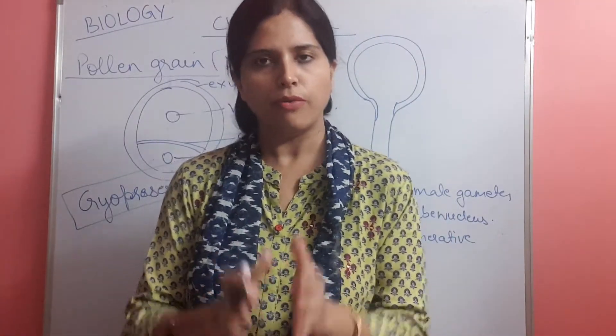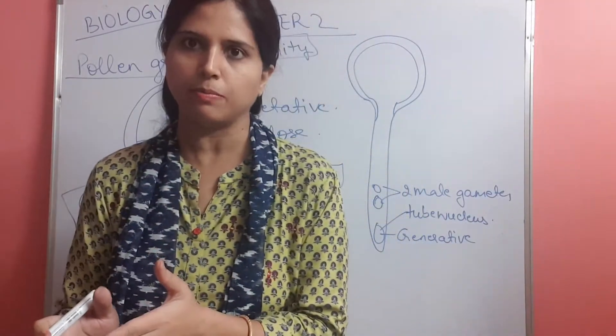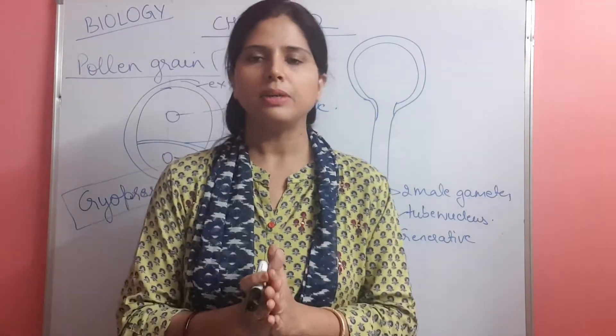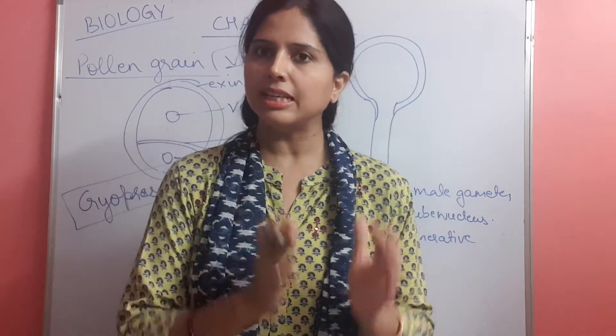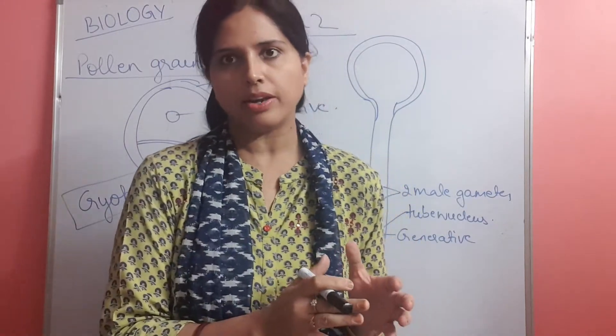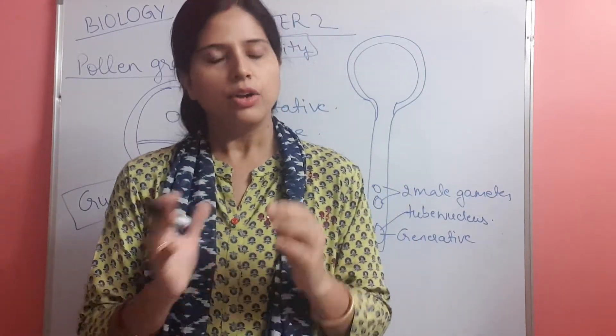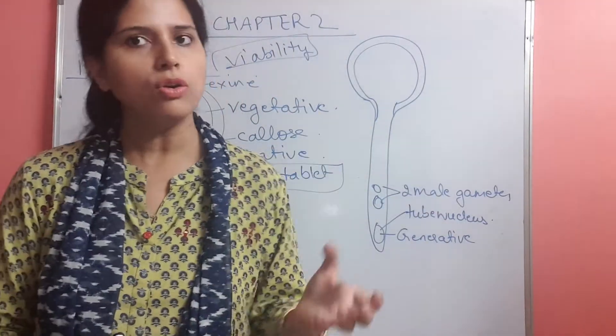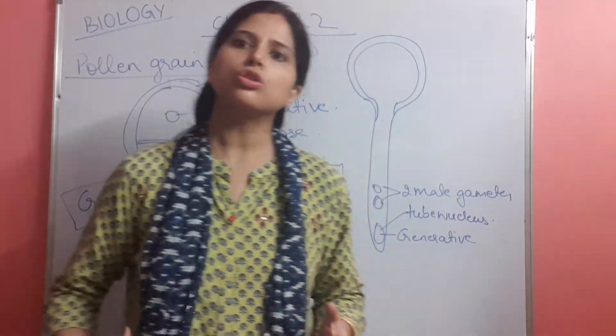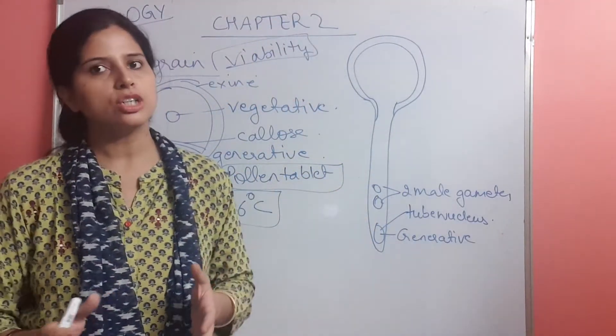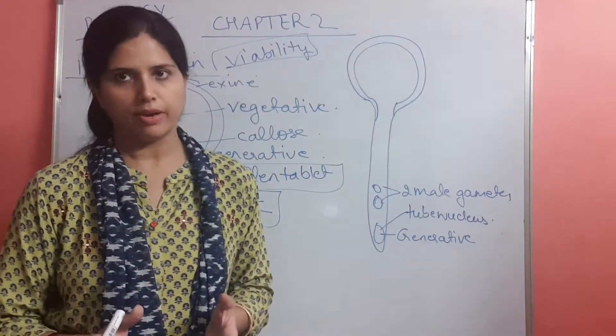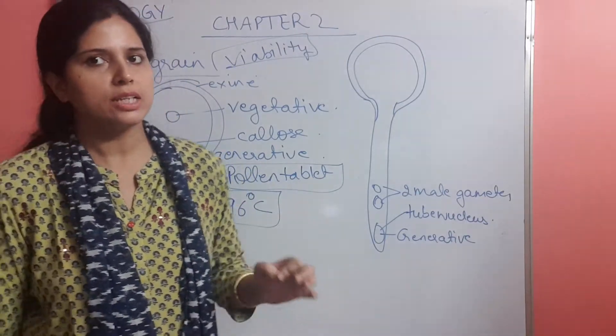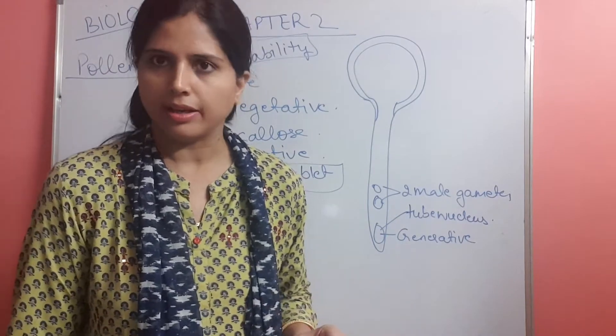If viable pollen grain falls on the stigma, then fertilization can occur. It means that the enzymes inside the pollen grain are active. If non-viable, so if the pollen grain has fallen on the stigma, then also the fertilization will not occur. That is non-viability. So here we have viability. For fertilization to occur, viability has to be there.